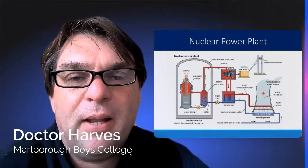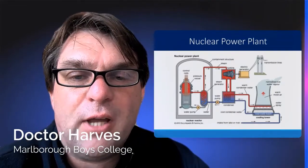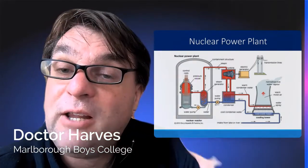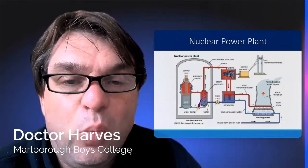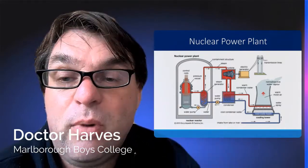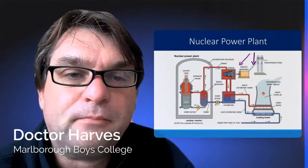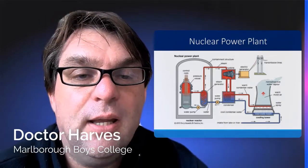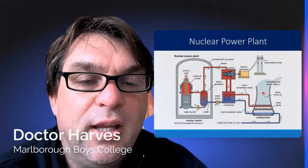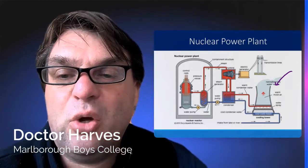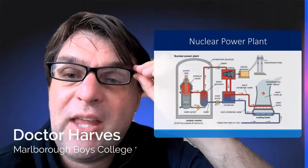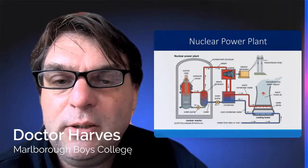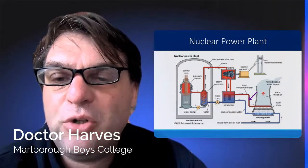In a nuclear power plant, Uranium fuel rods go into the reactor, through which cold water is pumped. The nuclear fission reaction occurs, which heats the water. That hot water goes through a turbine, then through an electrical generator, producing electricity for your home. The waste warm condenser water goes into cooling towers — what you see coming out is just steam. The cooled water is then recycled back into the reactor and the process begins again.